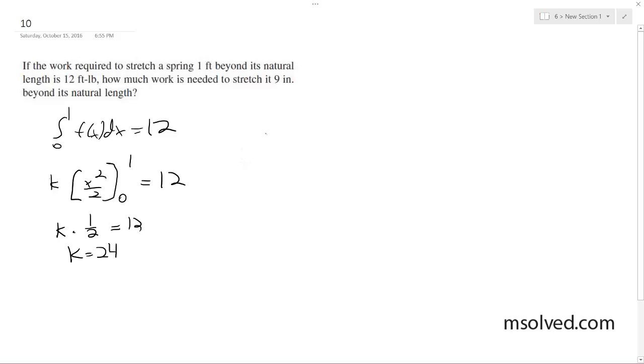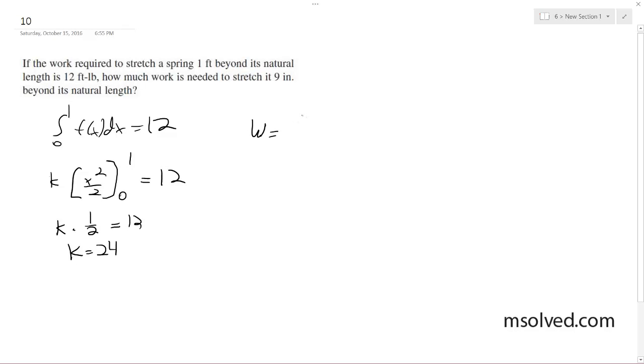Now, so we're going three-quarters of a foot, 9 over 12. So work's going to be equal to 0 to 3 fourths, 24 x dx, because that's our constant.